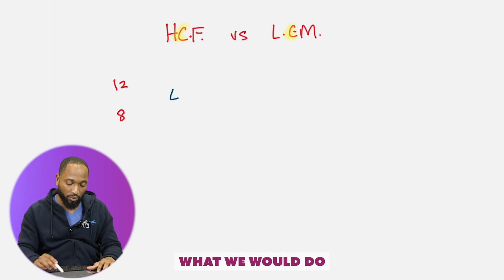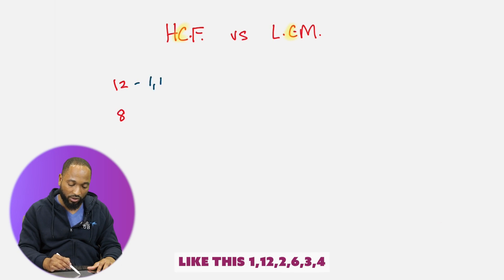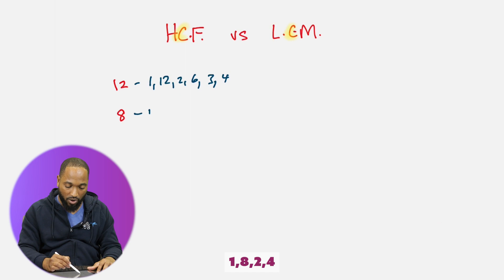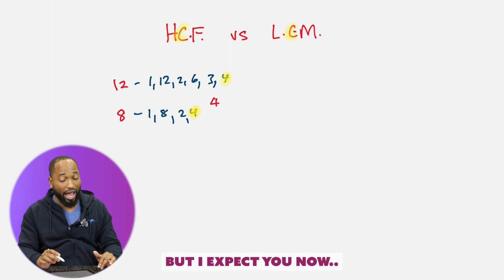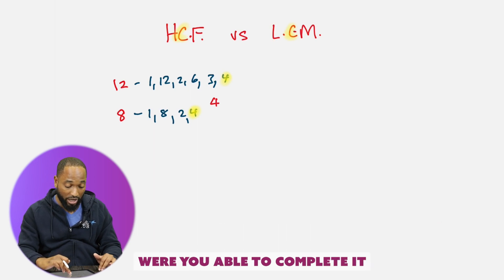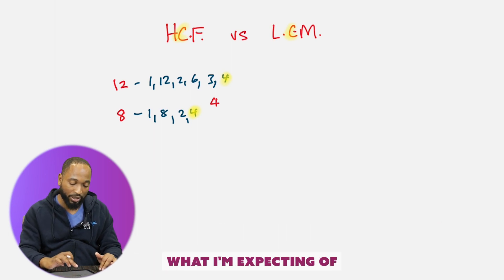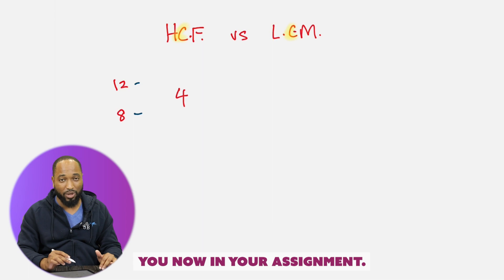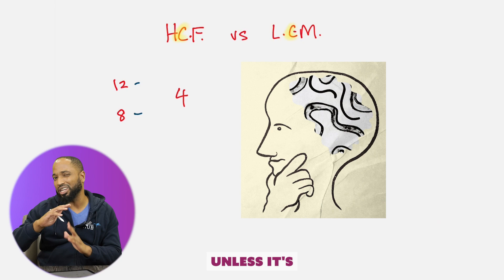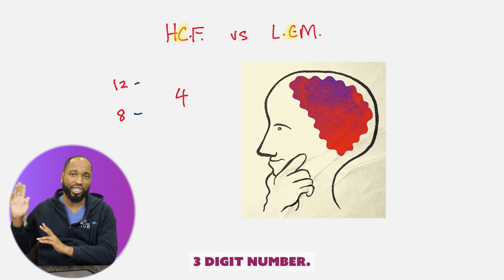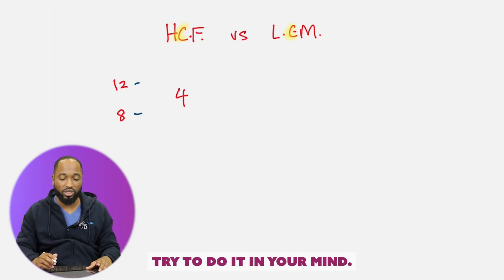Back in the day, what we would do is write out all the factors like this: 1, 12, 2, 6, 3, 4 — and for 8: 1, 8, 2, 4. Look at all the factors, pick out the highest, and then say: therefore 4 is the highest common factor. What I expect now — were you able to complete it in your mind? Because that's what I'm expecting of you. In your assignment, challenge yourself to do everything mentally when it comes to HCF and LCM, unless it's some big two-digit or three-digit number. But for these simple numbers, try to do it in your mind.